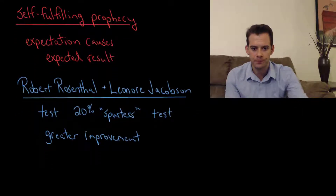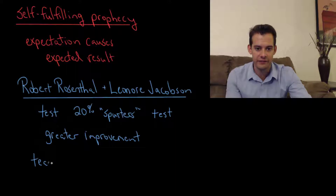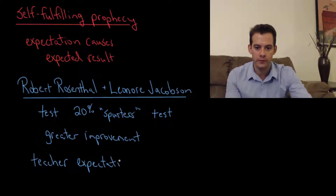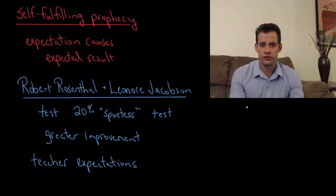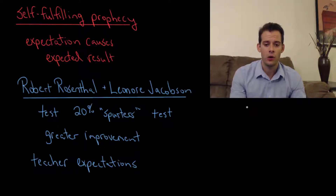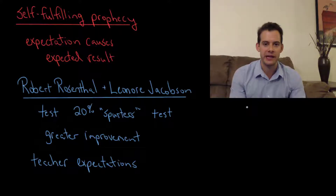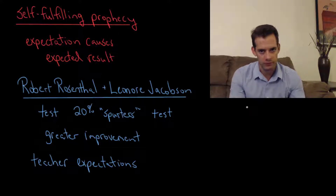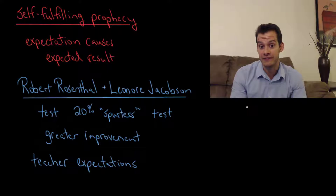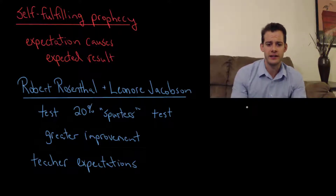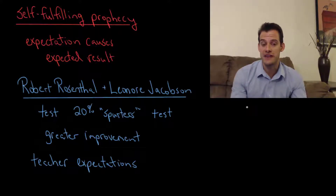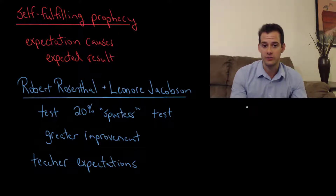Why might this be? Teachers may behave differently toward students they believe have greater potential — calling on them more often, or encouraging them more persistently when they struggle. A teacher might think, 'I know this kid has the potential,' and focus more effort on helping them improve. Other students not considered to have this potential might not receive as much attention. So students experience different environments even in the same classroom with the same teacher, and this can impact their abilities.